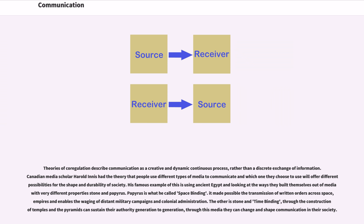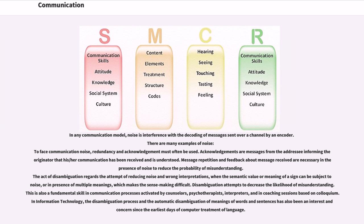In any communication model, noise is interference with the decoding of messages sent over a channel by an encoder. There are many examples of noise. To face communication, noise, redundancy, and acknowledgement must often be used. Acknowledgements are messages from the addressee informing the originator that his/her communication has been received and is understood. Message repetition and feedback about message received are necessary in the presence of noise to reduce the probability of misunderstanding. The act of disambiguation regards the attempt of reducing noise and wrong interpretations when the semantic value or meaning of a sign can be subject to ambiguity or in presence of multiple meanings, which makes the sense-making difficult. Disambiguation attempts to decrease the likelihood of misunderstanding.